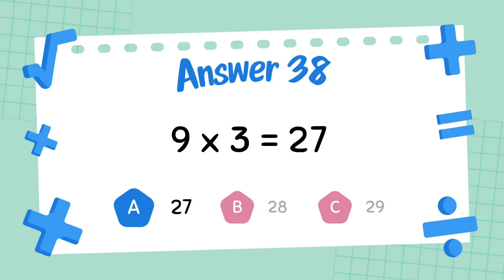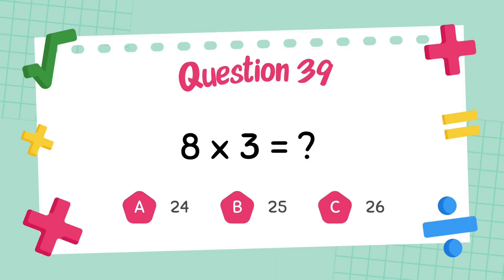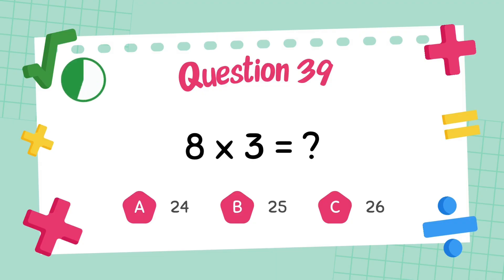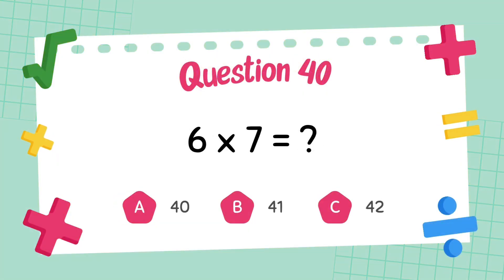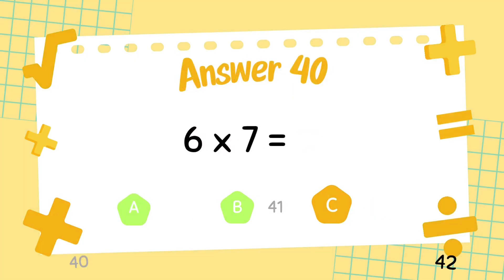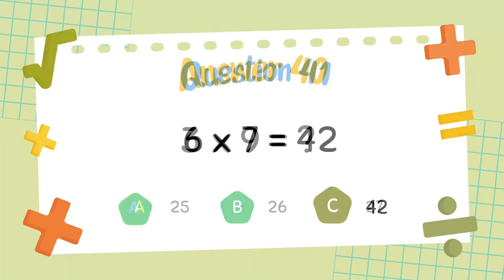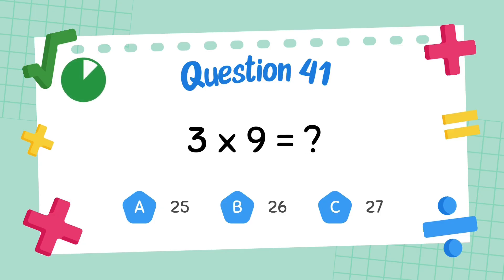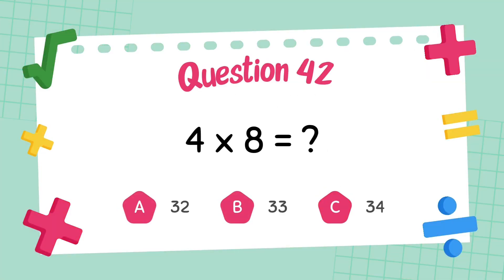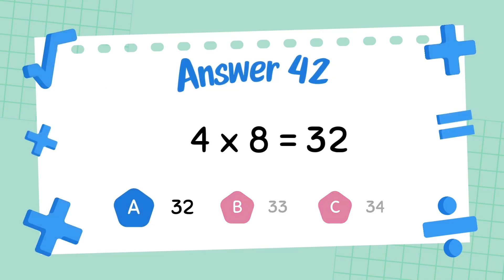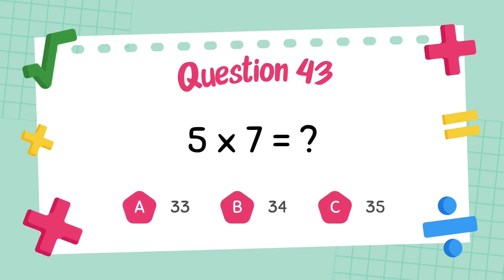What is 8 multiply 3? The answer is 24. What is 6 multiply 7? The answer is 42. What is 4 multiply 8? The answer is 32. What is 5 multiply 7?